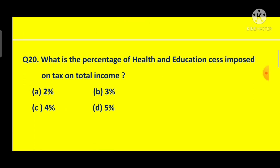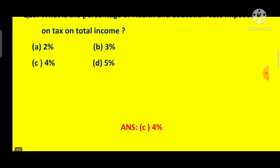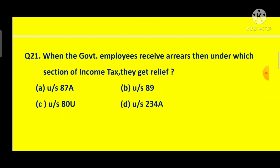Question No. 19: What is the percentage of health and education cess imposed on tax on total income? Health and education cess is 4%, answer C. Question No. 21: When government employees receive arrears, under which section do they get relief? If you receive arrears of previous years, you get relief under Section 89. Answer is B.